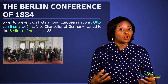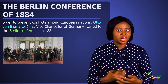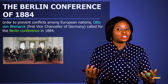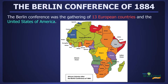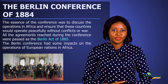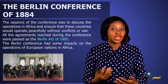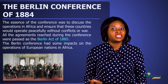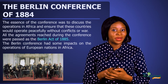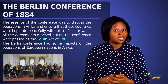In order to prevent conflict or rivalry between these European nations, the first Vice-Chancellor of Germany, Otto von Bismarck, had to call for the Berlin Conference. The Berlin Conference was the gathering of 13 European nations, including Austro-Hungary, Britain, Denmark, France, Germany, Portugal, Spain, and others, as well as the United States of America. No African leader was invited. During this conference, the partition of Africa was discussed and it was agreed that there would be no conflict among these European nations, but rather they would all exist peacefully. All the agreements reached were passed as the Berlin Act of 1885.